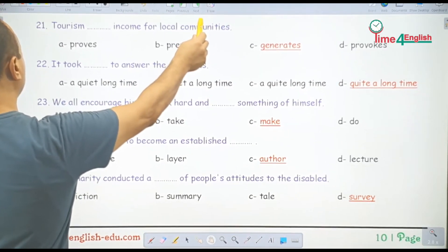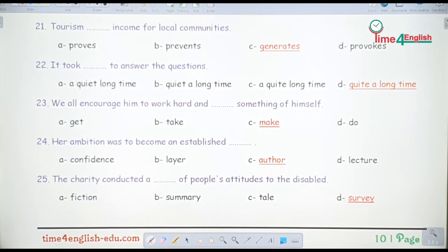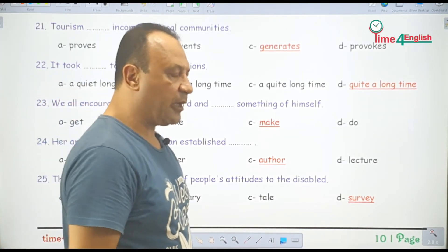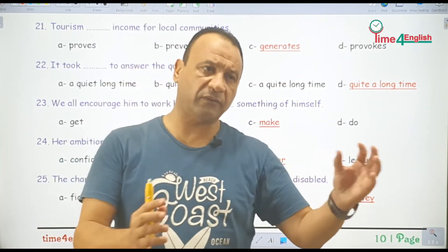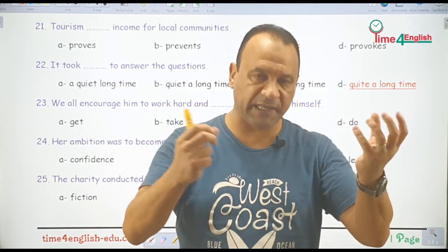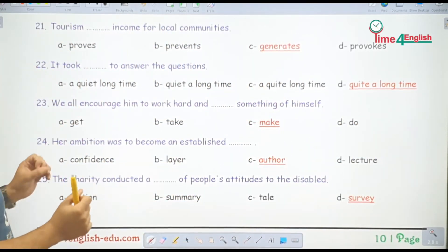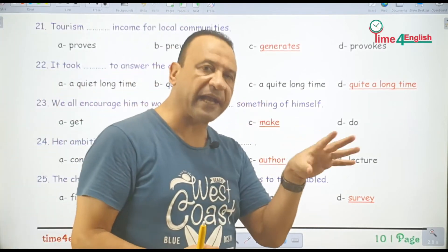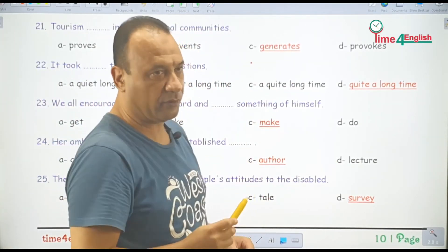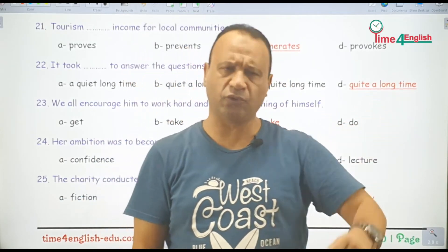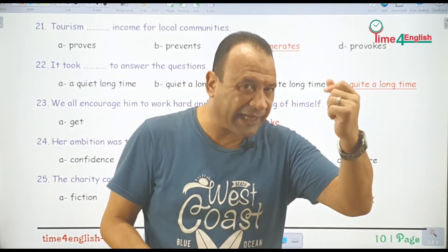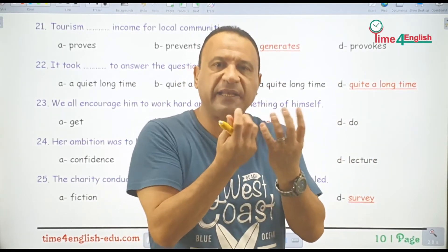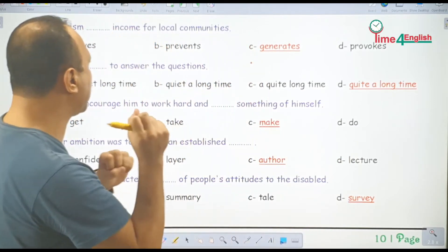Number 21 — tourism generates income for local communities. المجتمعات المحلية الصغيرة والبيئات التي يمكن أن يكون فيها عوامل جذب سياحية — السياحة بتدر عليهم دخل كبير. زي ما بنقول generate electricity يعني ولّد كهرباء، مع income نقول generate income يعني يجلب لهم دخلاً كبيراً.